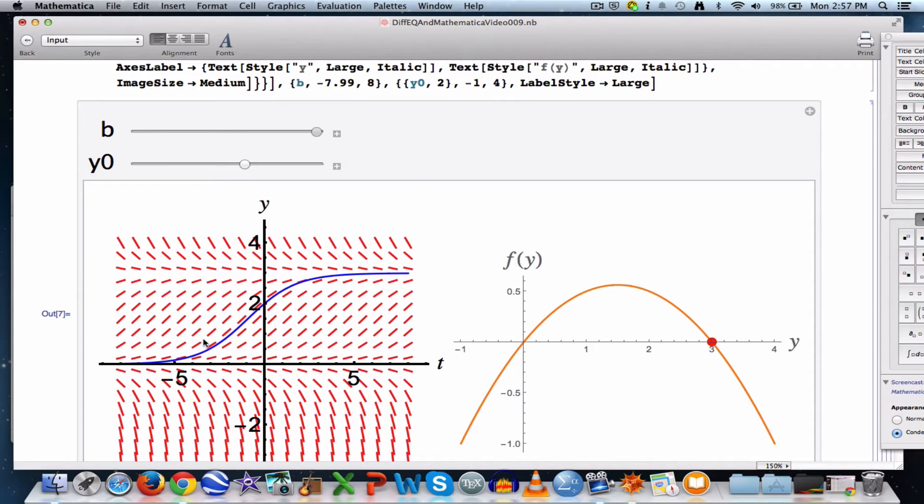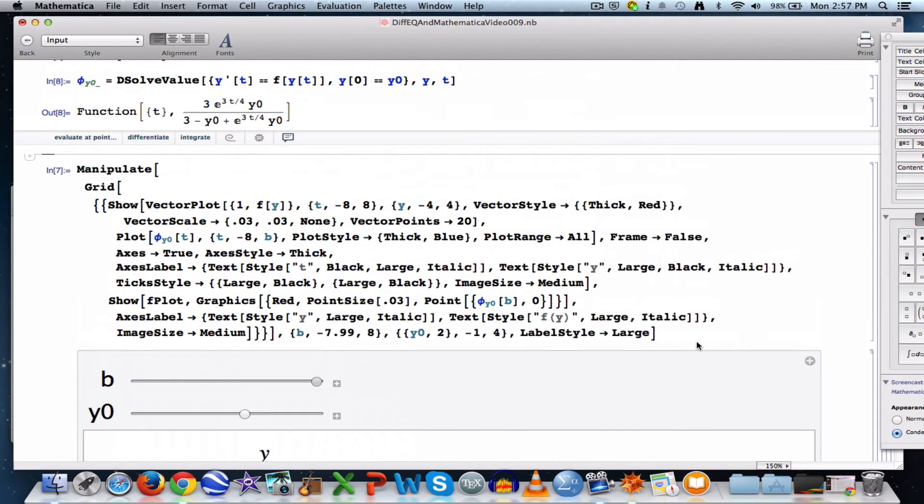And now I get the animation we saw at the end of the last video. And everything is fine. There's the solution curve in the slope field, and here's the graph of f(y), and the y-axis is going to be a call of the phase line, and I've got a dot there.